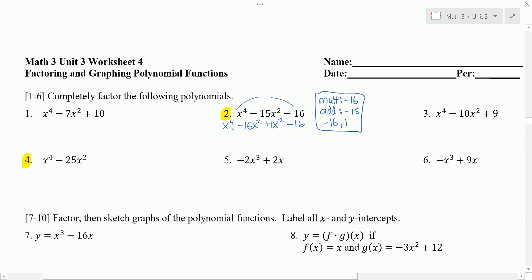I'm going to factor by grouping. Looking at the left two terms, I could factor out an x squared. And we're left with x squared minus 16. And the right two terms, I could factor out a positive 1 only. And I have another x squared minus 16.